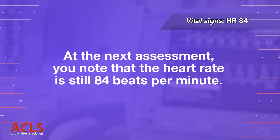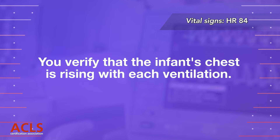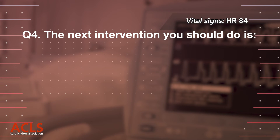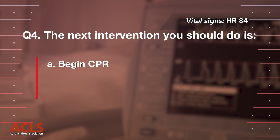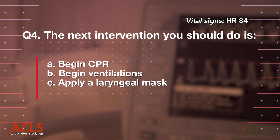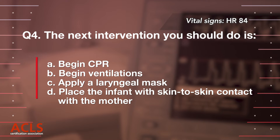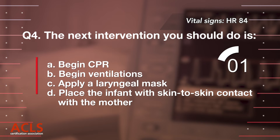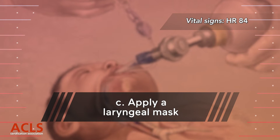A cardiac monitor will help you easily see the cardiac results of your respiratory interventions. At the next assessment, you note that the heart rate is still 84 beats per minute. You verify that the child's chest is rising with each ventilation. Question 4: The next intervention you should choose is... Correct answer: C. Apply a laryngeal mask.